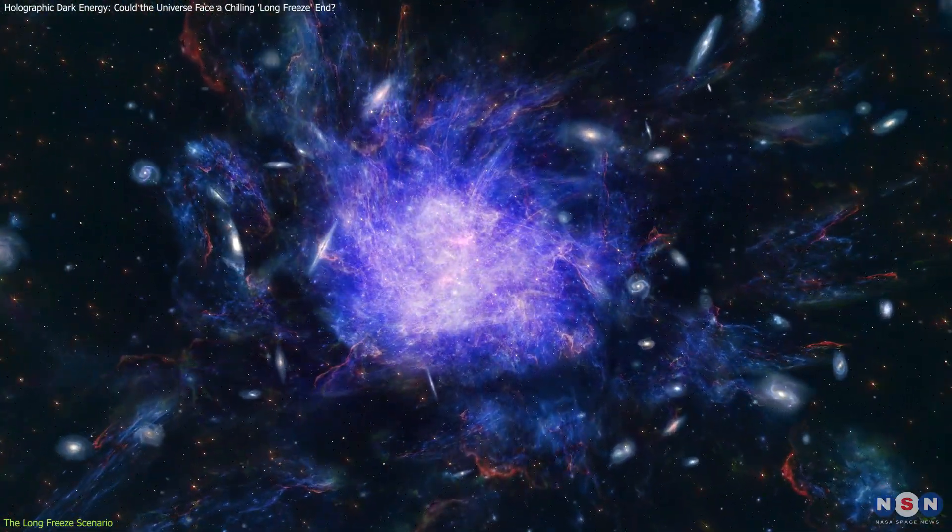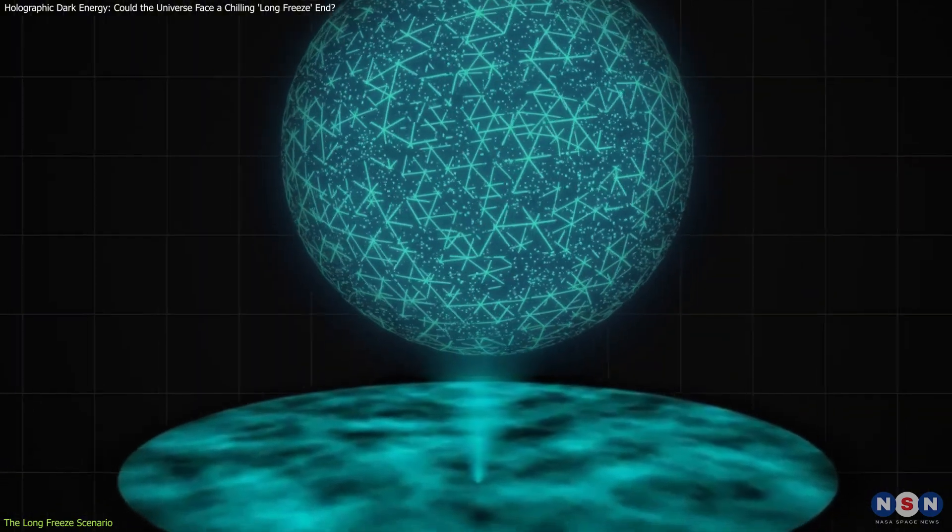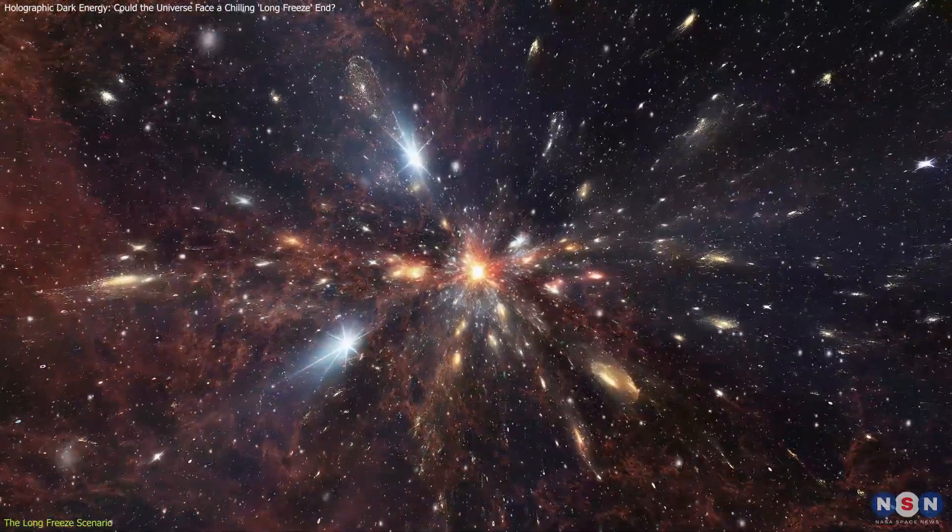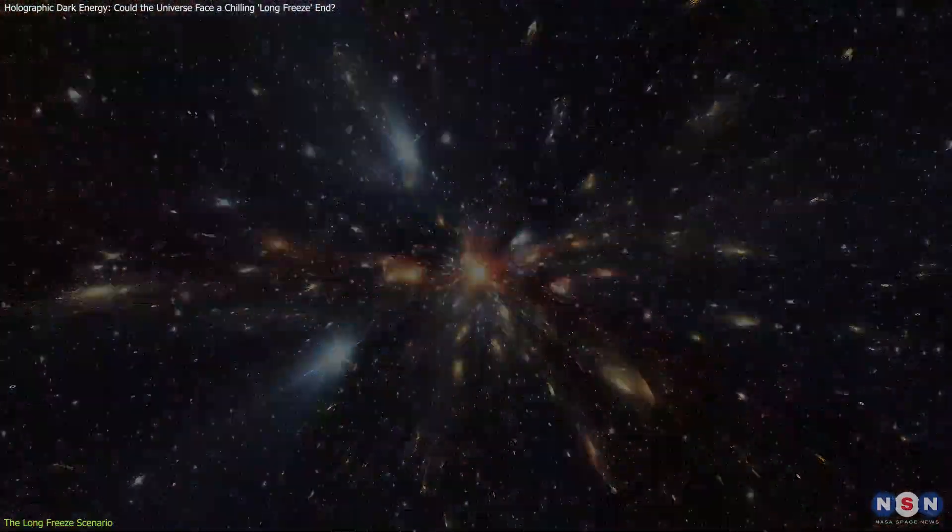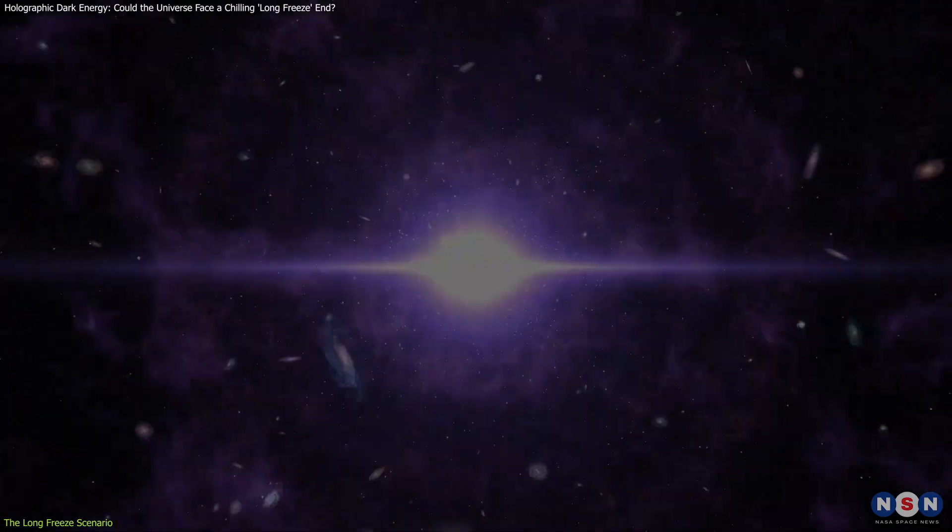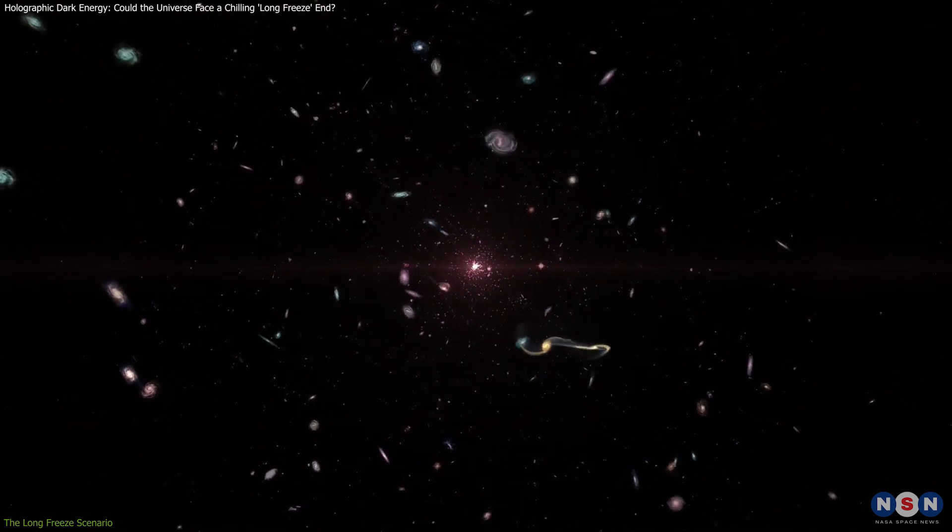But why does this happen? Researchers have shown that the holographic dark energy model naturally leads to this outcome. As the universe expands, dark energy and matter density decrease. When dark energy's influence drops below a critical point, the universe's expansion slows significantly, resulting in a near stagnant state.